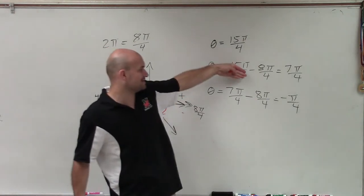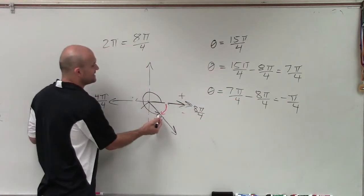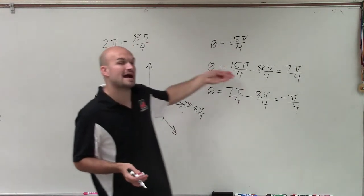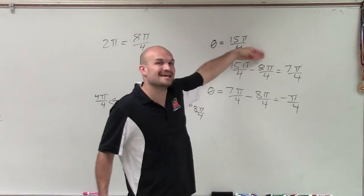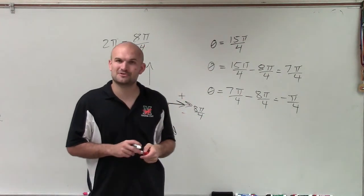So in this case, what I had to do to find my two coterminal angles is I had to subtract. Because if I kept on adding 2 pi, I would just keep on getting larger and larger positive angles. So I had to subtract 2 pi, as we represented as 8 pi over 4, twice. So there you go, ladies and gentlemen. That is how you determine your coterminal angles. Thanks.